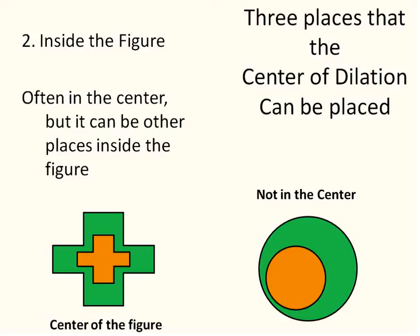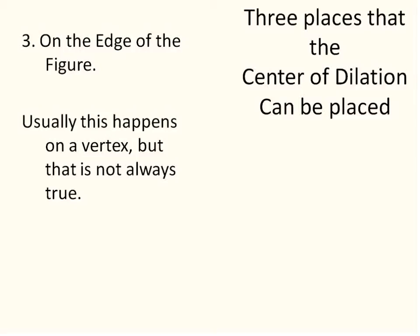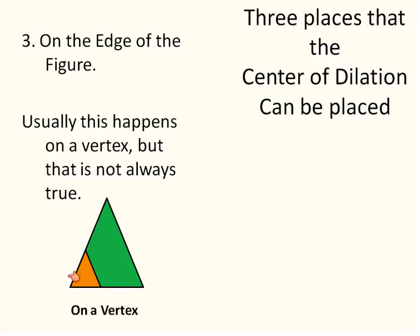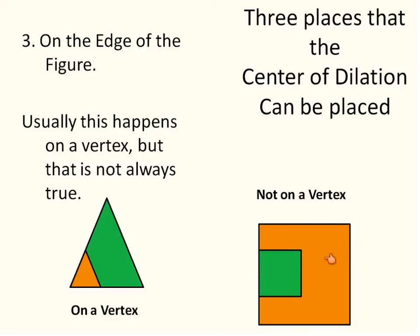So the first location is outside the figure, the second is inside the figure. Where's the third possible place? On the edge of the figure. It can be inside, outside, or along the edge. Usually with the center of dilation on the edge, it's on a vertex — you've probably seen a picture like this where the figure just shrinks down to that vertex. However, it could also be on the side, and it would shrink down towards that center of dilation on the side. Those are the three places: inside the figure, outside the figure, or on the edge of the figure.